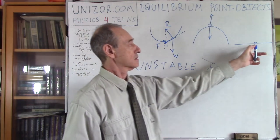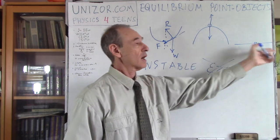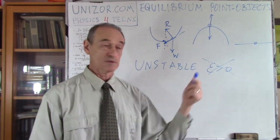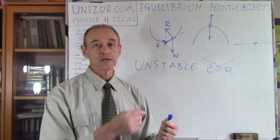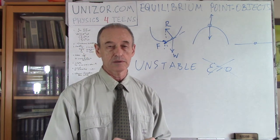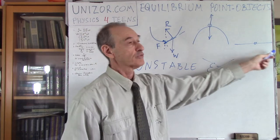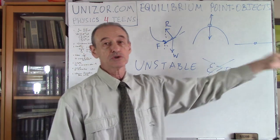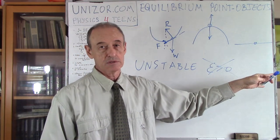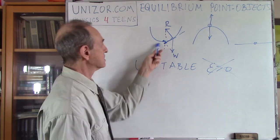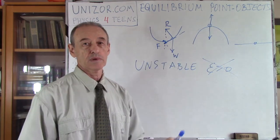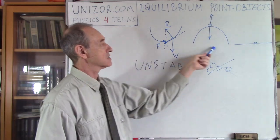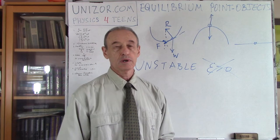And finally, neutral equilibrium. On a horizontal plane, a ball can have any point as a point of equilibrium. If you move it from the equilibrium point, it will not return back, but it will not go away either — it will just stay where it is. This picture is a very good illustration of the concepts of stable, unstable, and neutral equilibrium, and this basically completes my discussion of equilibrium for point objects.